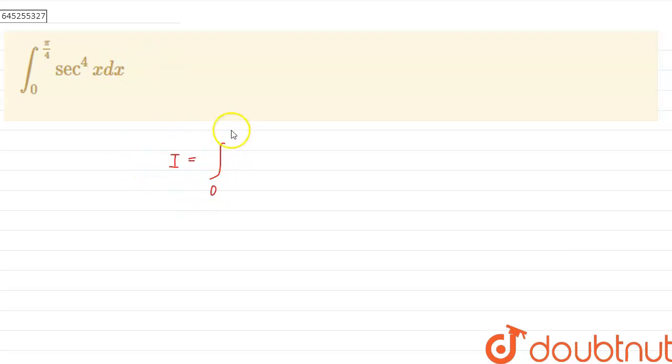So I is equal to integral 0 to pi by 4 sec to the power of 4x dx. So we can write this sec to the power of 4x as 0 to pi by 4 sec square x into sec square x dx.